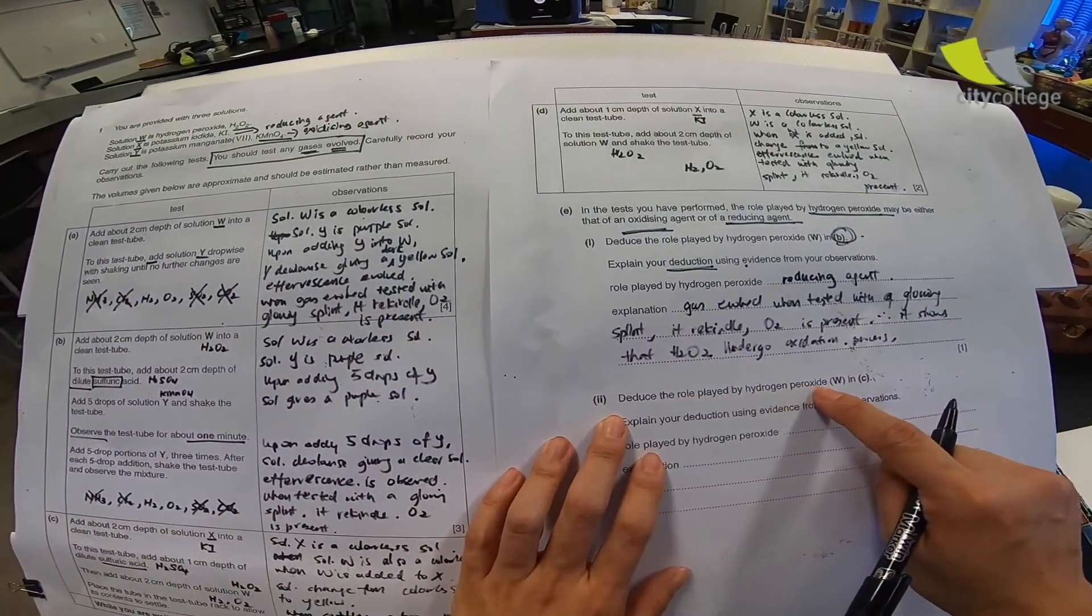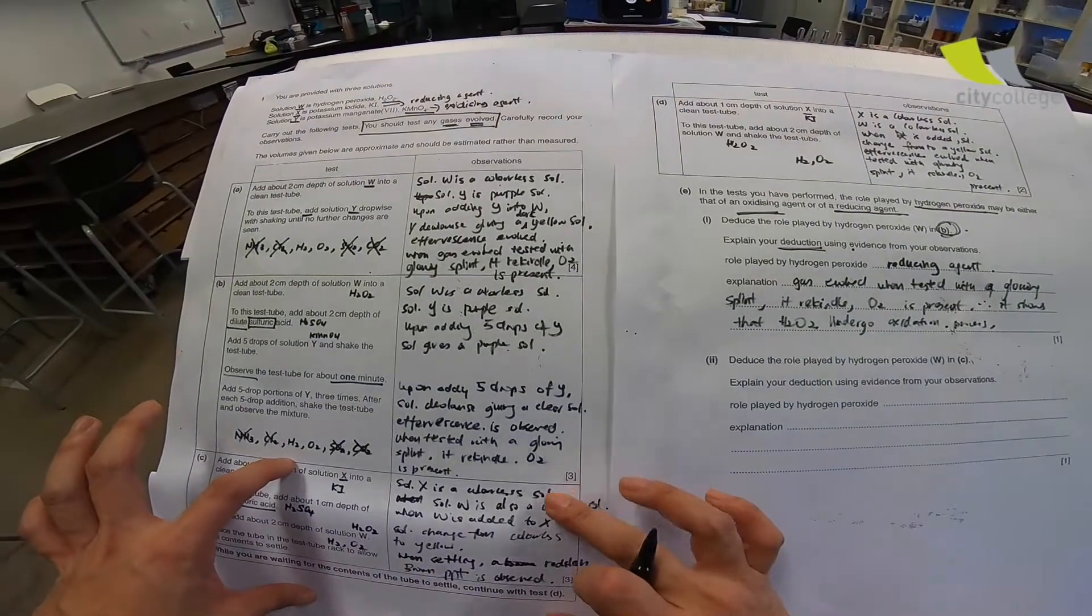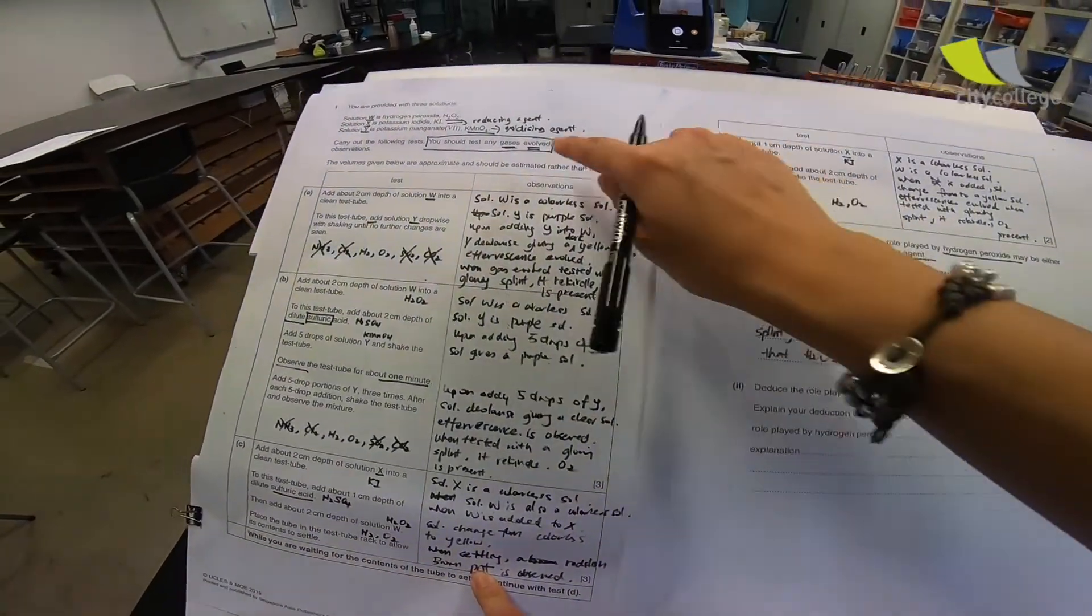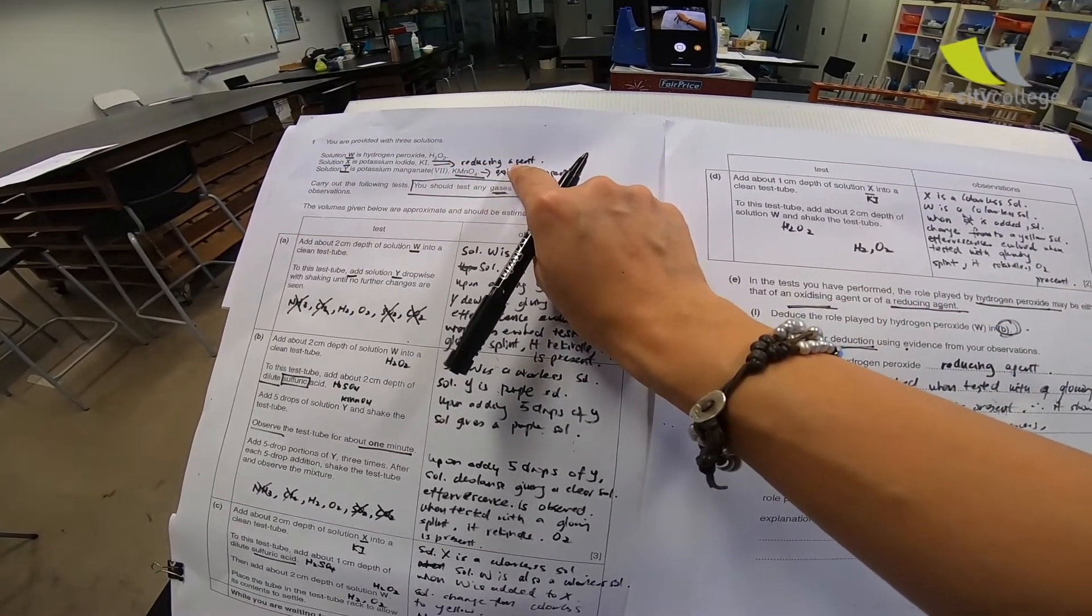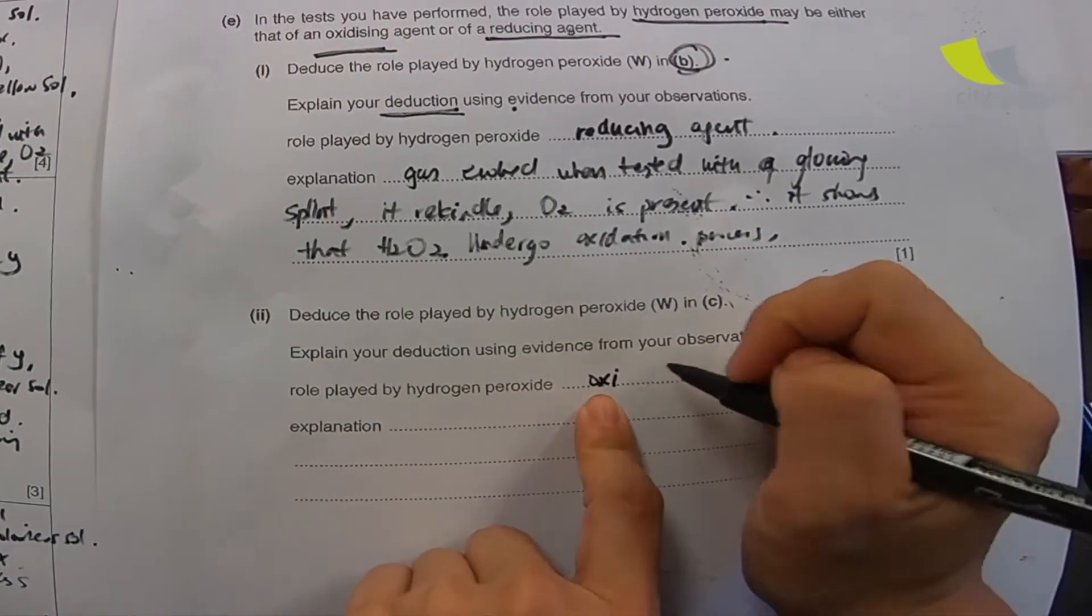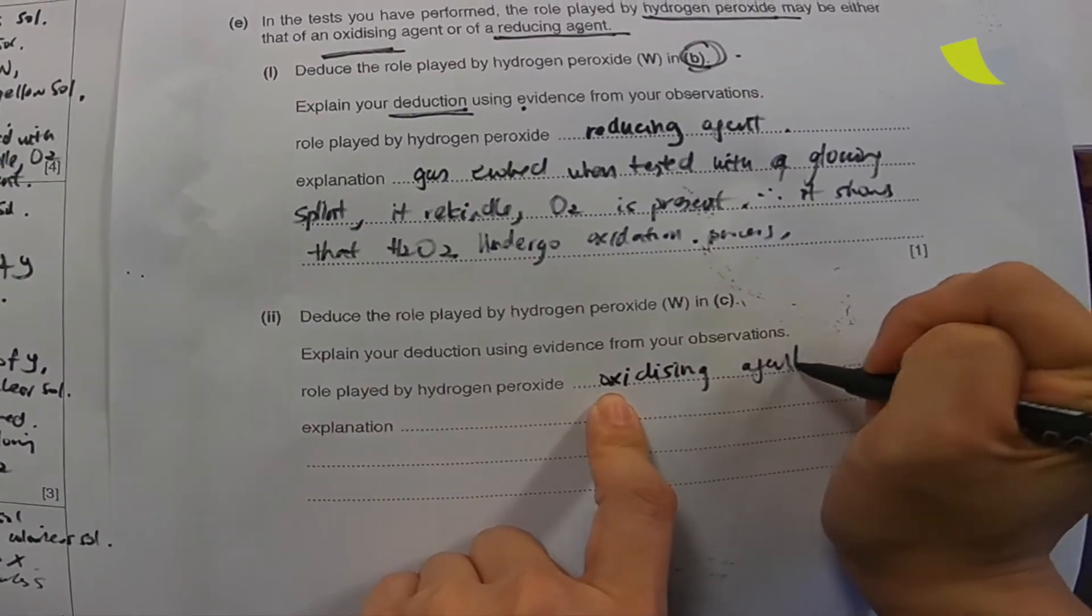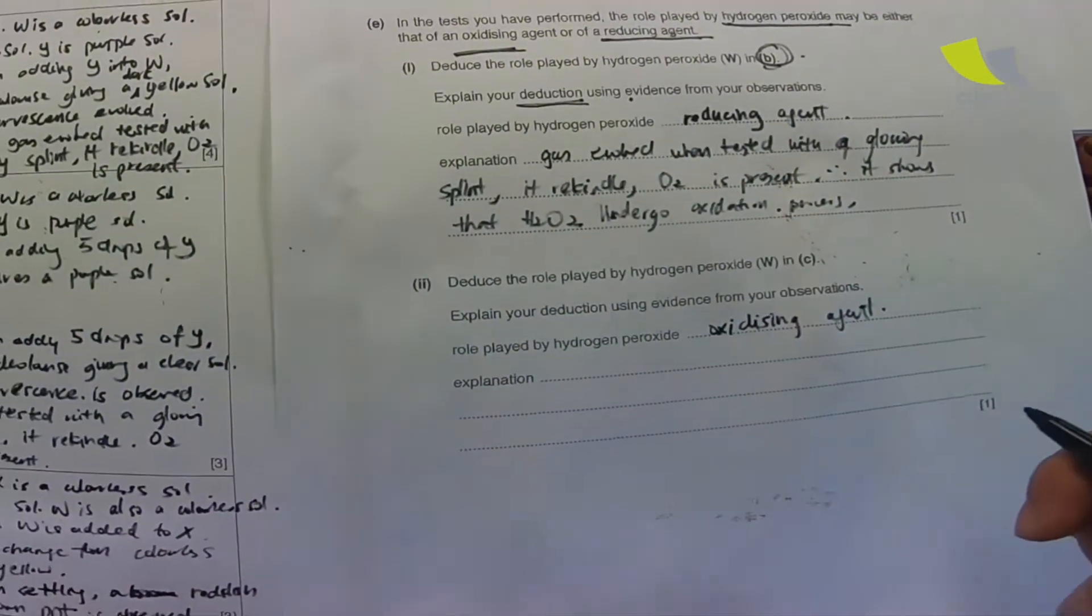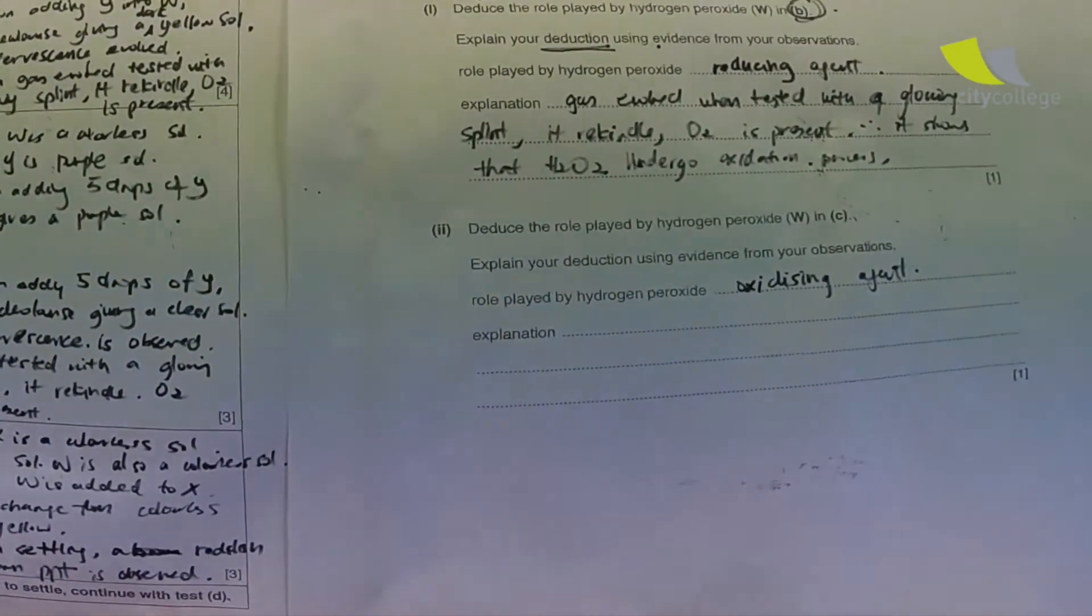Now, deduce the role played by hydrogen peroxide W in C. C, over at this part, there is evidently no gases, but there's a color change. Now, as I say, KI is a reducing agent. Therefore, hydrogen peroxide will be the opposite, will be the oxidizing agent. Explanation, what do you see? Even if your chemistry is not so good, you notice that there is a brown PPT, something is formed. So, use that as your evidence.